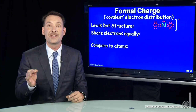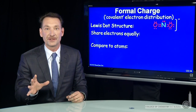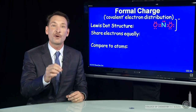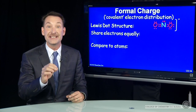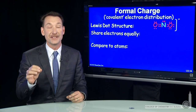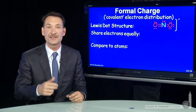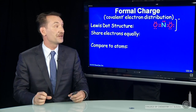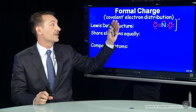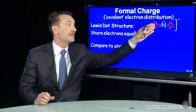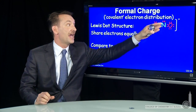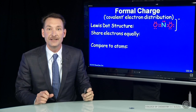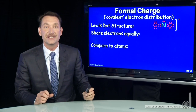When you draw a Lewis electron dot structure for a molecule, you can assign a formal charge to each atom in the molecule based on your structure. The way you do that is you follow this recipe: you take the electrons and you share them equally about each atom.